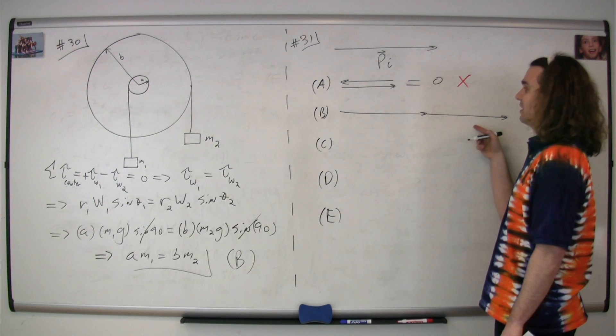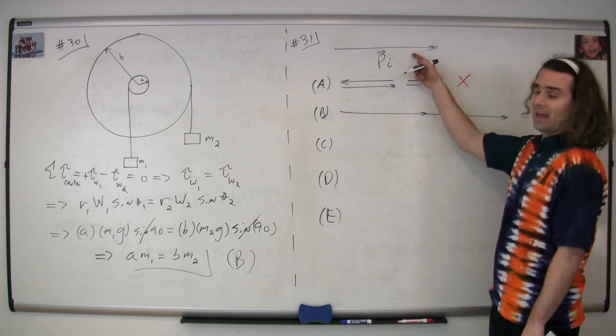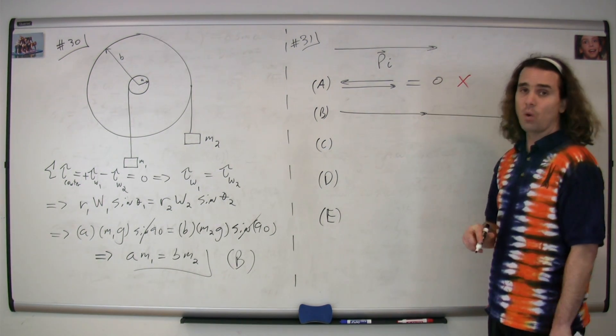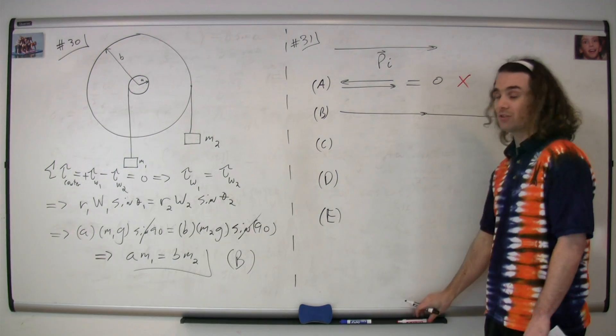Notice for B, when you do tip to tail vector addition for both of these, they actually add up to something that's almost twice what the initial momentum is, so this can't be it either.